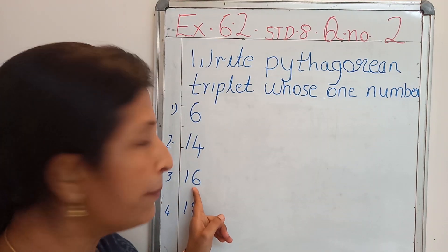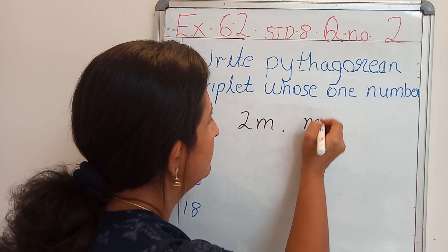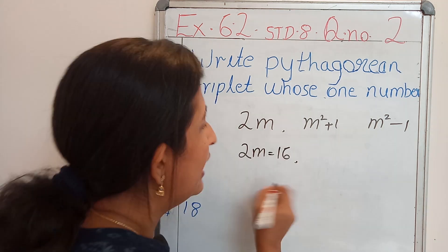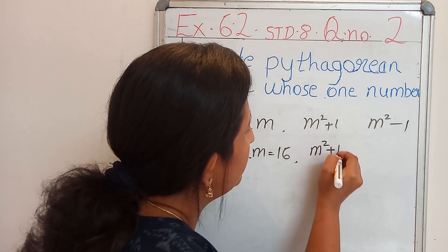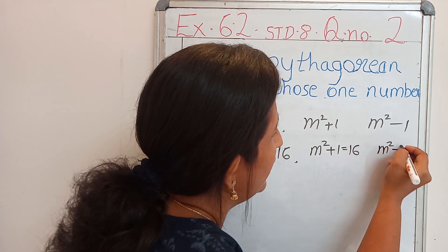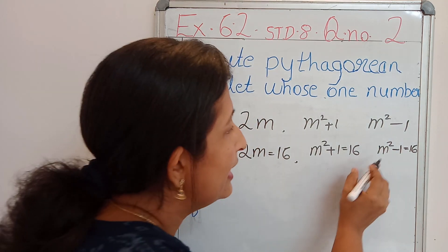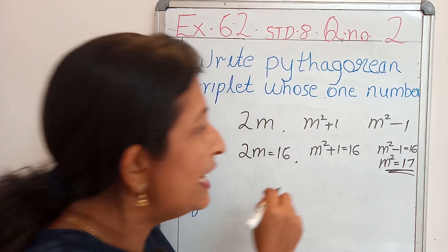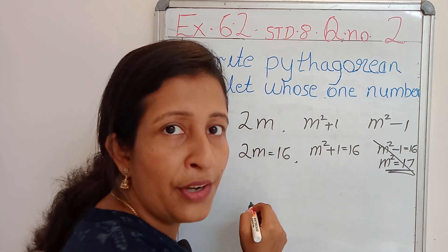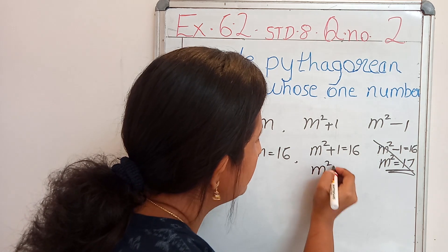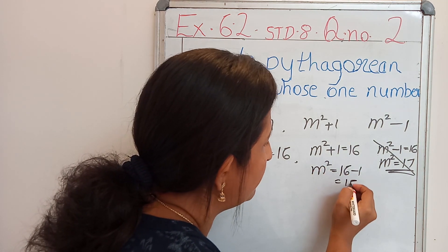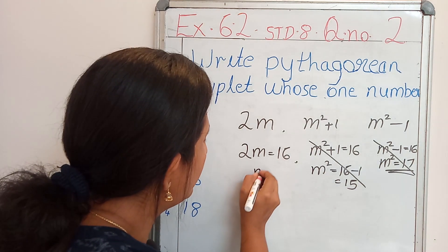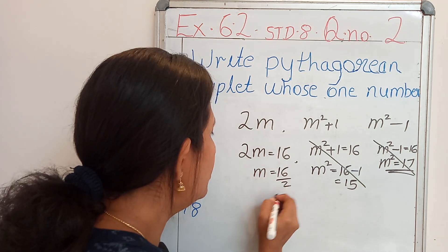Coming back to question number 3. One number is 16. If 2m equals 16, otherwise m square plus 1 equals 16, otherwise m square minus 1 equals 16. First check: if m square minus 1 is 16, then m square equals 16 plus 1 that is 17 — m won't be a natural number, so we can avoid this. Then if m square plus 1 is 16, then m square equals 16 minus 1 equals 15 — m won't be a natural number. If 2m equals 16, then m equals 16 divided by 2 equals 8.